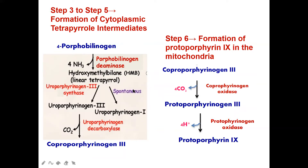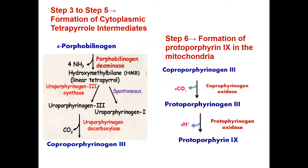HMB cyclizes spontaneously to form uroporphyrinogen 1, or is converted to uroporphyrinogen 3 by uroporphyrinogen 3 synthase. Uroporphyrinogen 3 is then converted to coproporphyrinogen 3 by decarboxylation in the presence of uroporphyrinogen decarboxylase.